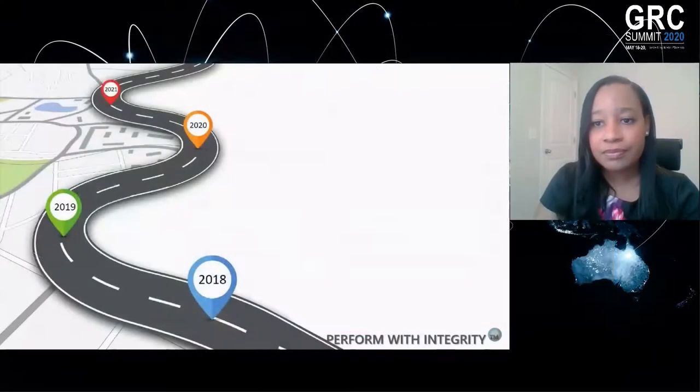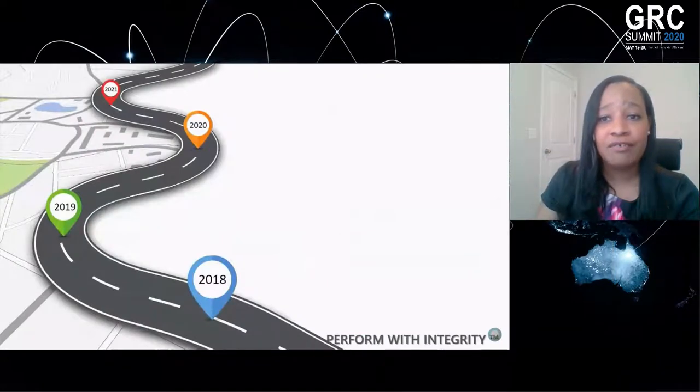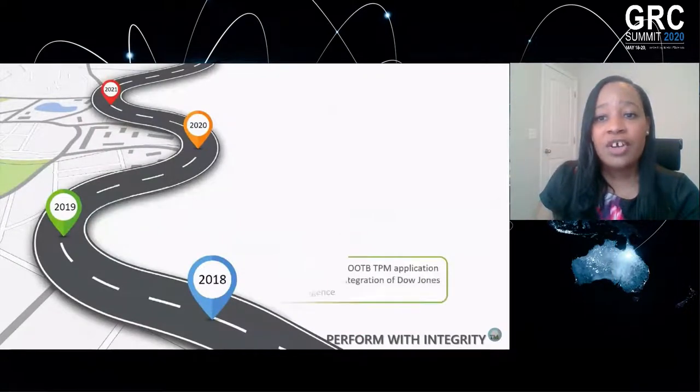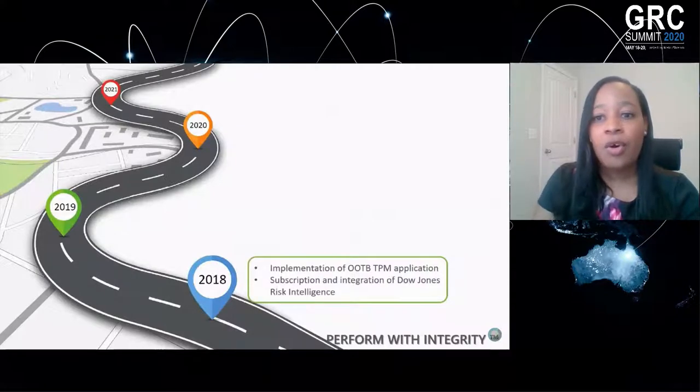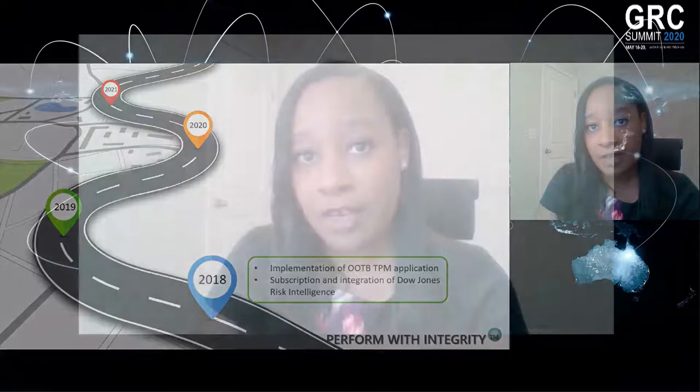Sharing our roadmap: we started with the deployment in 2018 of the out-of-the-box third-party risk management program. That included just the simple risk assessments, due diligences, and scorecards — making sure that at a minimum we were doing the bare requirements as expected by the regulator.